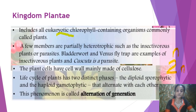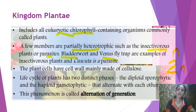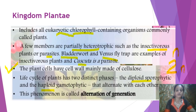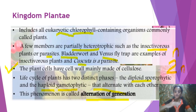To summarize: plants are eukaryotic organisms that contain chlorophyll. Some are partially heterotrophic, like insectivorous plants — bladderwort and Venus flytrap — and some are parasites like Cuscuta. They have a cell wall made up of cellulose. They have two phases in their life cycle: diploid (2n) is the sporophytic stage and haploid (n) is the gametophytic stage. They alternate with each other — this phenomenon is called alternation of generation.